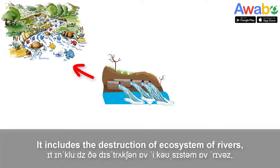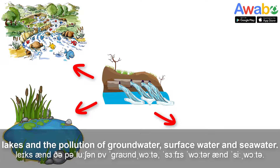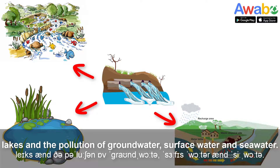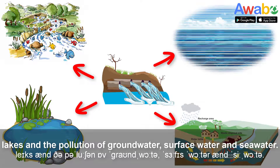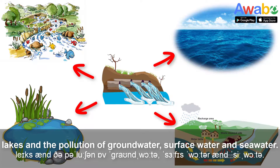The effects of water pollution include the destruction of the ecosystem of rivers and lakes, and the pollution of groundwater, surface water, and seawater.